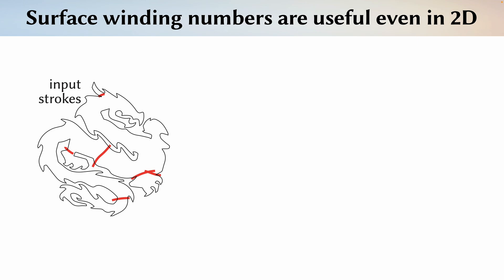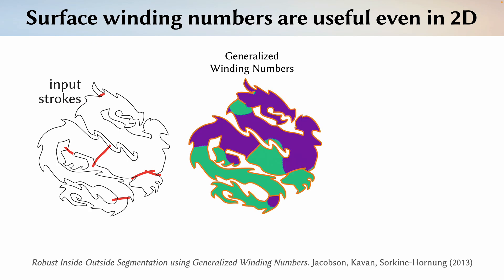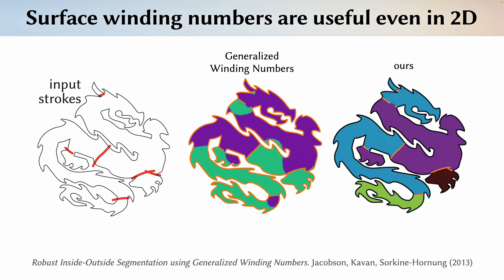Our method is also useful for flat 2D graphics. For example, let's say I want to segment this dragon using some quick sketched strokes. Because something like generalized winding number treats the domain as the entire plane, its influence bleeds across the boundary of the dragon. Whereas our method accounts for the boundary, so it does give us the segmentation we expect.